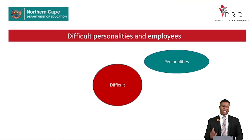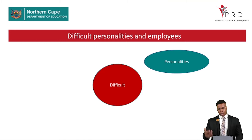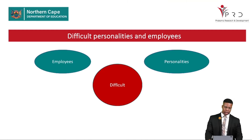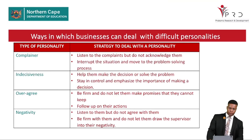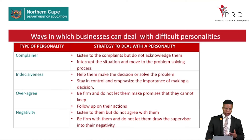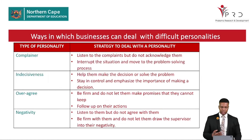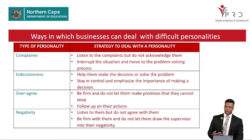Now we discuss difficult personalities and employees. We look at the types of difficult personalities and how a business can deal with each type, as well as strategies to address the challenges they bring. The difficult personality types include: a complainer, an indecisive individual, an over-agreeing individual, a negative individual, an expert, a quiet individual, and an aggressive individual.